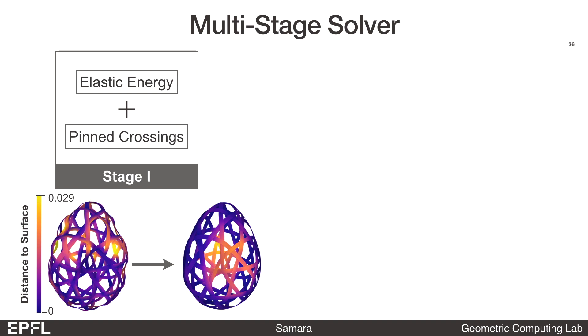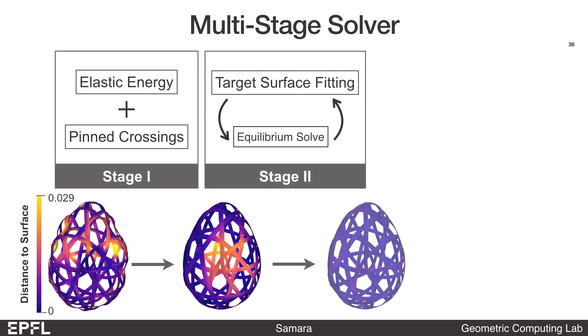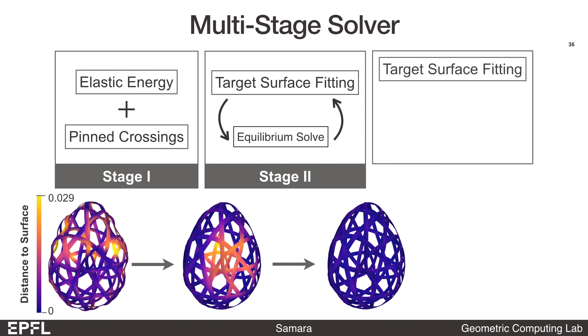After stage 1, the structure is in a much more stable configuration, but once we release the pinned crossings, it will deviate from the target surface again. In this example, the main deviations happen in the region with negative mean curvature. In stage 2, we solve the nested optimization problem defined earlier but without the highly nonlinear contact forces term. The resulting structure in equilibrium closely approximates the target surface. At this point, we evaluate the contact forces at all crossings. If we observe separation forces, we proceed to stage 3, where the contact force term is added back to the objective.